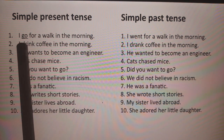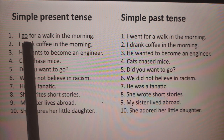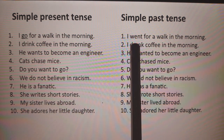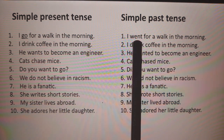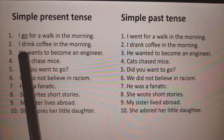Here, the first verb is 'go' — so what is the second form of 'go'? It is 'went.' We can say the past form of the verb. Simply, we just have to change it to the past form.